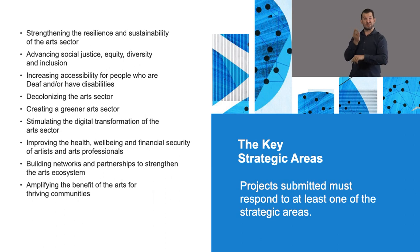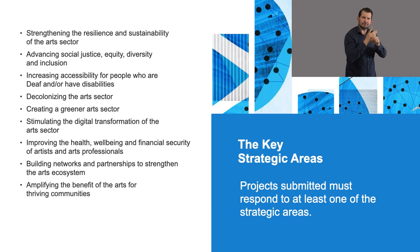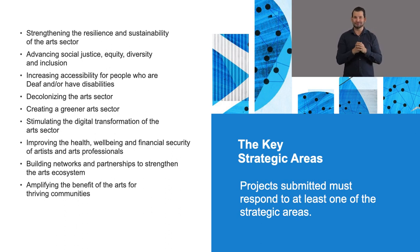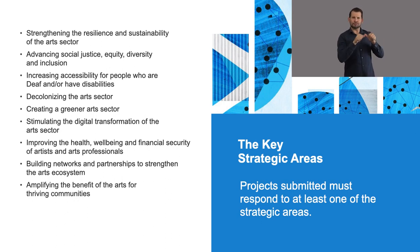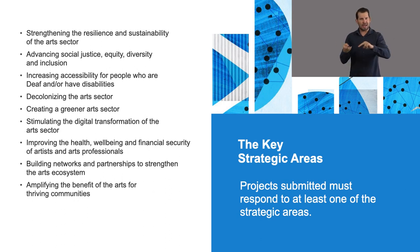All projects submitted under one of the three main components must address one or more of the Fund's key strategic areas, which reinforce our commitment to supporting positive and fundamental change in the arts sector. The strategic areas include resilience and sustainable development, social justice, accessibility, decolonization, climate change, health and wellbeing, strengthening the arts ecosystem, and amplifying the benefits of the arts. You can also find this list in the Cultivate Grant Guidelines, which are available on our website.